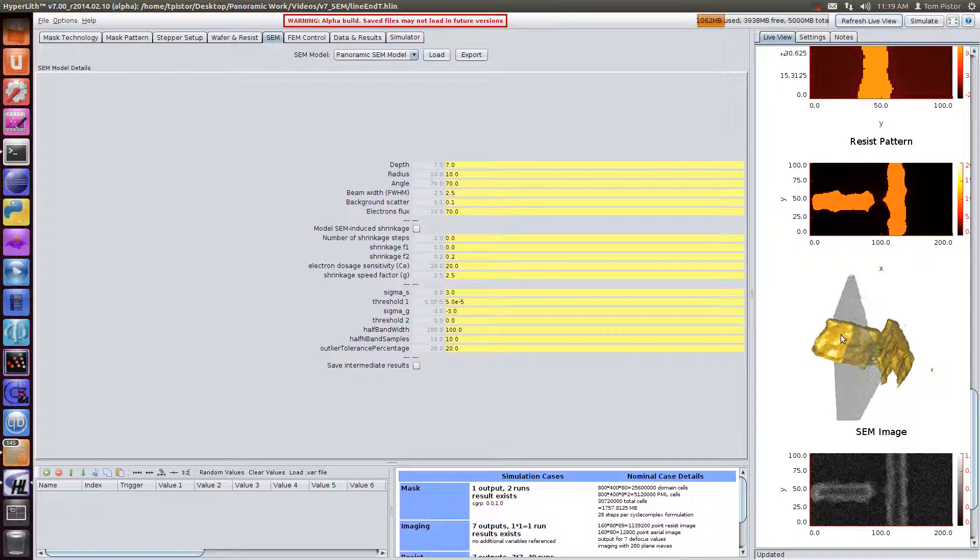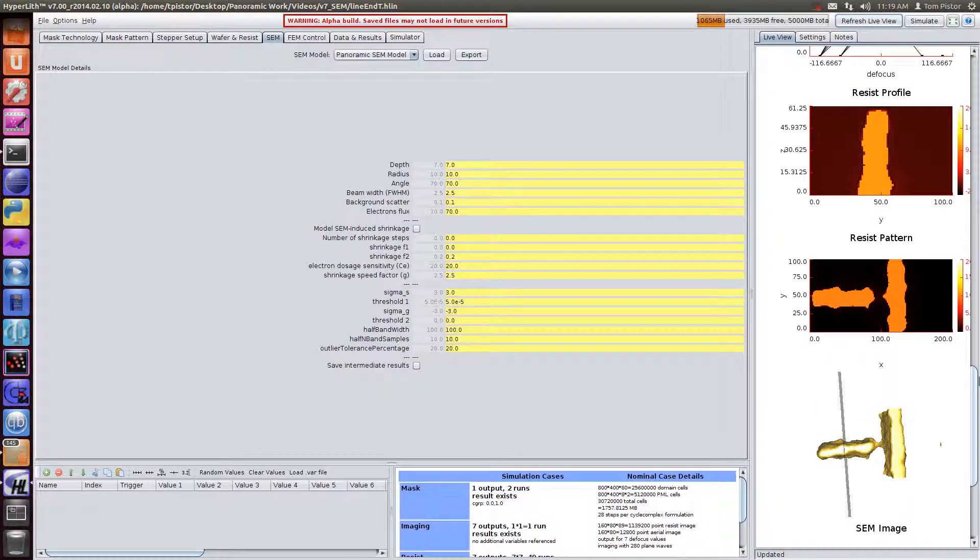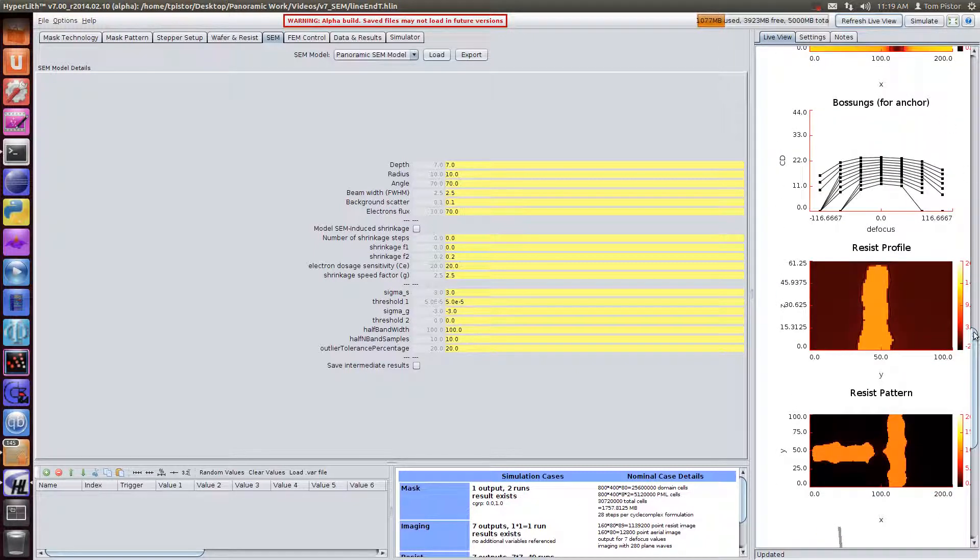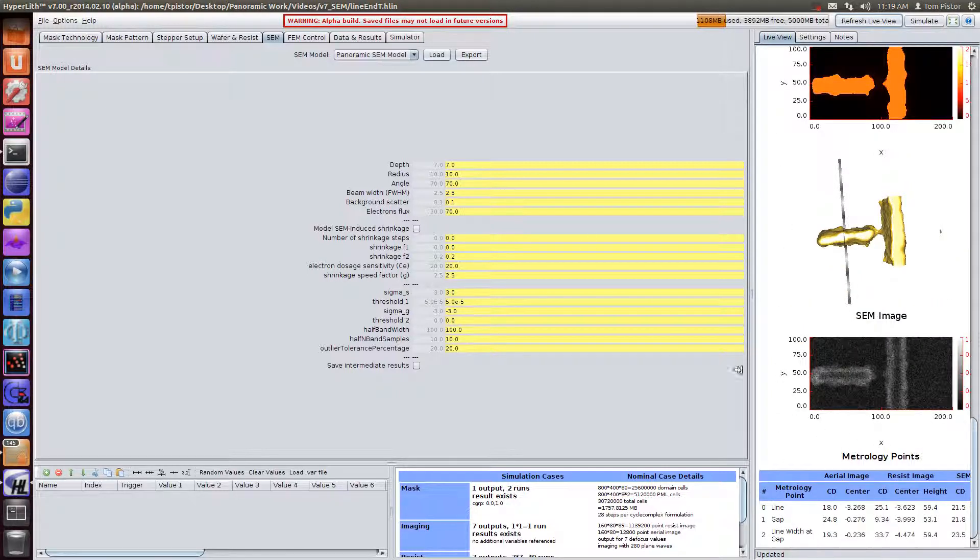That produces a SEM image. The SEM image also gets measured, just like the resist profile does and just like the aerial image does. It's essentially a new simulator. In the next video, we'll talk about our SEM image analyzer.